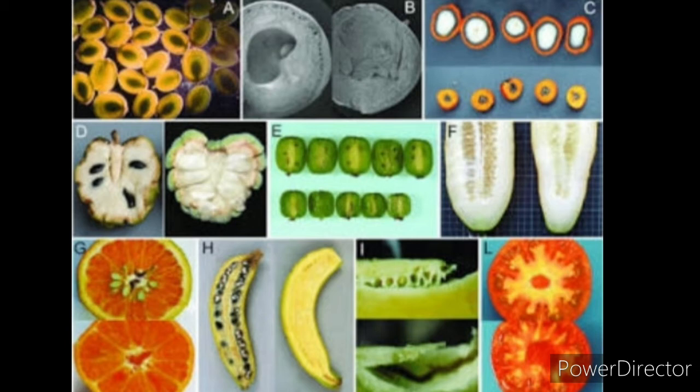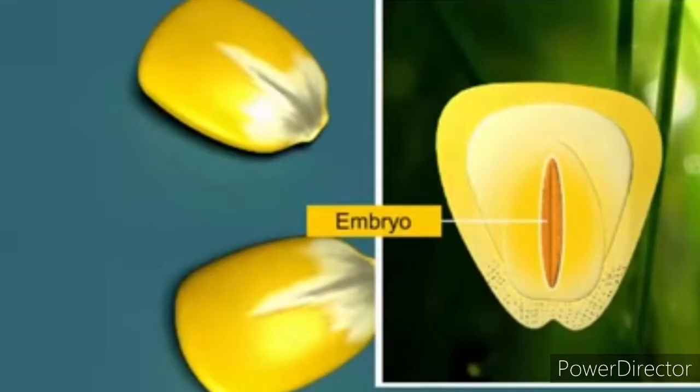Seeds offer several advantages to angiosperms. Firstly, reproductive processes such as pollination and fertilization require water. Seed formation is more dependable. Seeds also have better adaptive strategies for dispersal to new habitats and help species colonize other areas as they have sufficient food reserves. Young seedlings are nourished until they are capable of photosynthesis on their own.